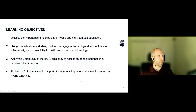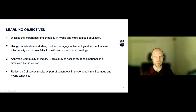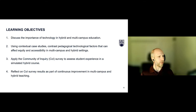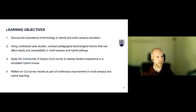Today there are four primary learning objectives: discuss the importance of technology in hybrid and multi-campus education; using contextual case studies, contrast pedagogical and technological factors that affect equity and accessibility; apply the community of inquiry survey to assess student experience in a hybrid course — this will be our main activity halfway through; and reflect on COI survey results as part of continuous improvement in multi-campus and hybrid teaching.